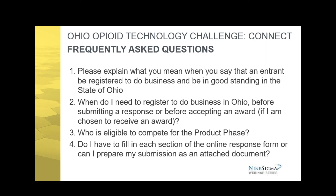This paperwork basically facilitates the state knowing how to pay you — your address, tax ID number, and things like that. Who is eligible to compete for the product phase? In the product phase, only the winners of the challenge phase are eligible. There are up to 12 challenge phase winners, and only those — no more than 12 parties — will compete for the four $1 million prizes. Regarding submission format: do I have to fill in each section of the online response form, or can I prepare my submission as an attached document? You can do either. In either case, pay attention to the list of required elements and adhere to the page limits. You're also allowed to upload supporting documents and provide a video link. In the online submission tool you can click a button indicating you're answering by attachment, and you don't have to go through each question individually.